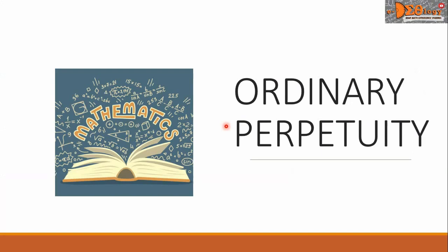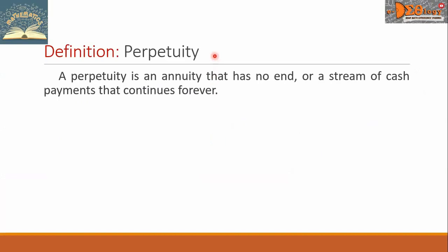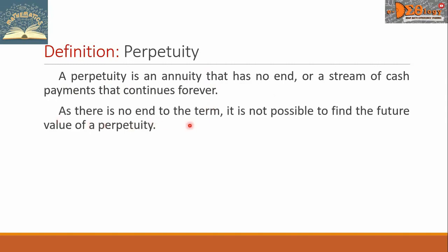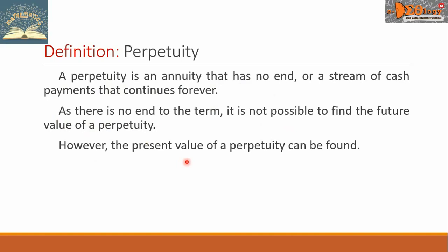Hi everyone. Today we're going to study ordinary perpetuity. Let us first define perpetuity. A perpetuity is an annuity that has no end, or a stream of cash payments that continues forever. As there is no end to the term, it is not possible to find the future value of a perpetuity. However, the present value of a perpetuity can be found.